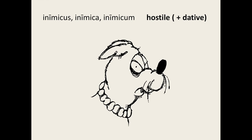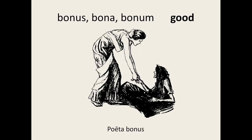Inimicus means hostile or unfriendly. Like amicus, it can also be used with a noun in the dative to indicate to whom the subject is hostile or unfriendly. Bonus means good. Take this example: poeta bonus. Remember that poeta is a masculine first declension noun, just like nauta and agricola.